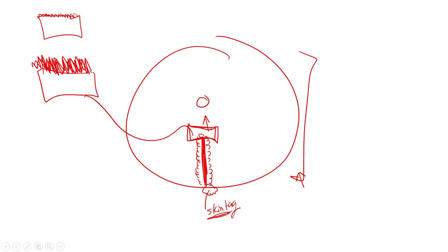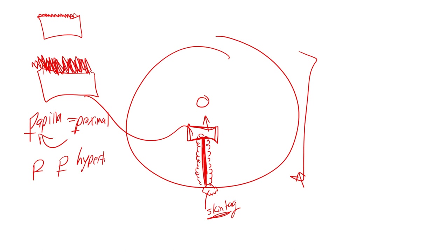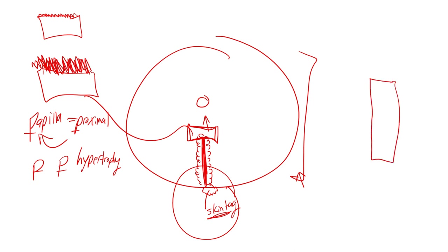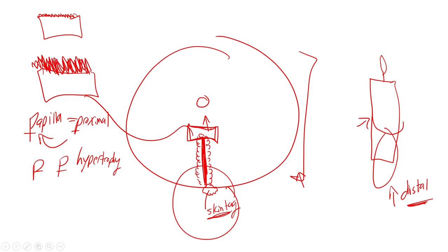Here's how to remember this: the word 'papilla' starts with P, and so does 'proximal' — so think PP: proximal papilla hypertrophy. Proximal means closer up toward the top, going back into the anus. For the skin tag being distal, I think of a price tag hanging down low — it hangs distal, away from the reference point. That's how I remember: proximal papilla hypertrophy, distal skin tag.